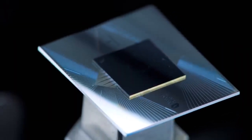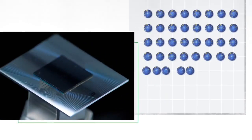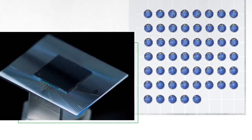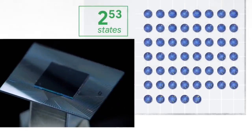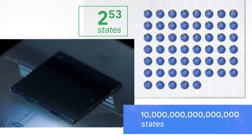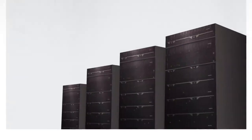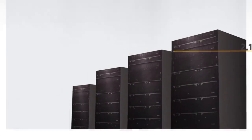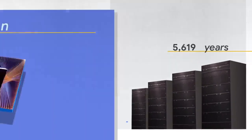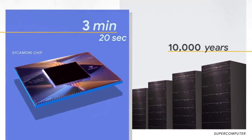The processor that achieved quantum supremacy is called the Sycamore processor. It's parallel processing 2 to the 53 states, which is 10 million billion — and that enormous amount of parallel processing is what gives it the power. When we run even small chunks of the computation on the largest supercomputer in the world, our estimate is that it would take thousands of years to complete the full computation.